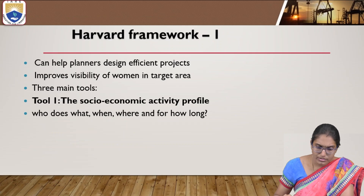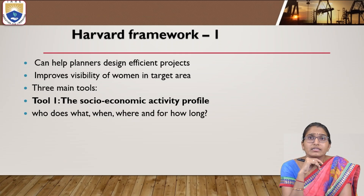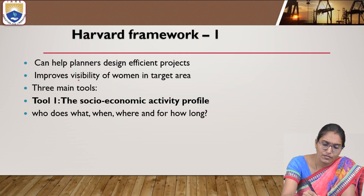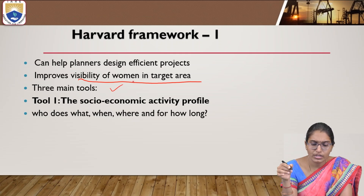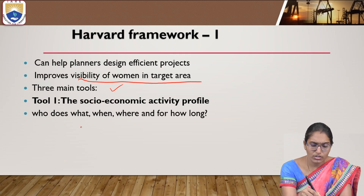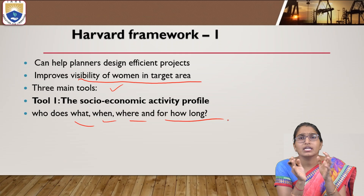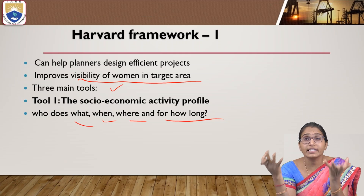Coming to the first framework — the Harvard framework. This helps planners design efficient projects and improves the visibility of women in a target area. It is mainly focused on women and has three main tools. Tool one is the socio-economic activity profile, which discusses who does what, when, where, and for how much time — based on the distinction between men and women: what they do, how they do it, and what time is required.